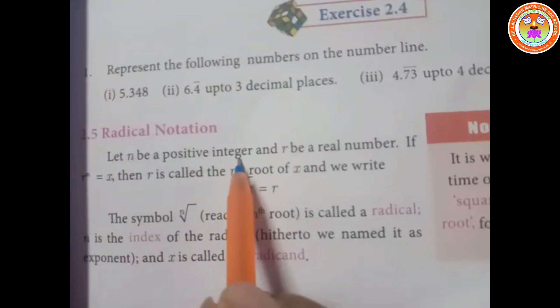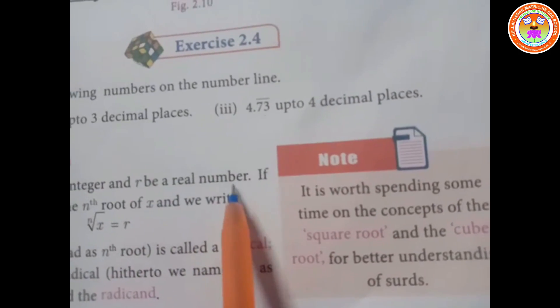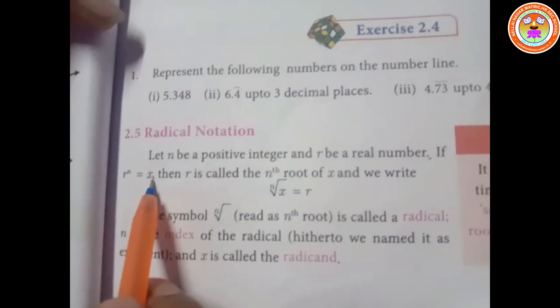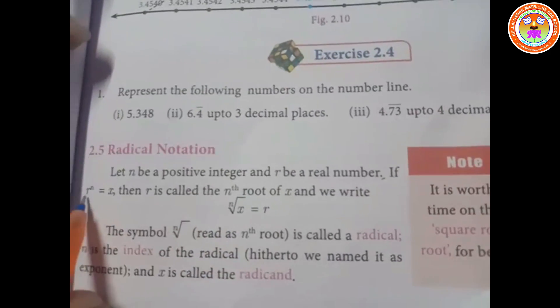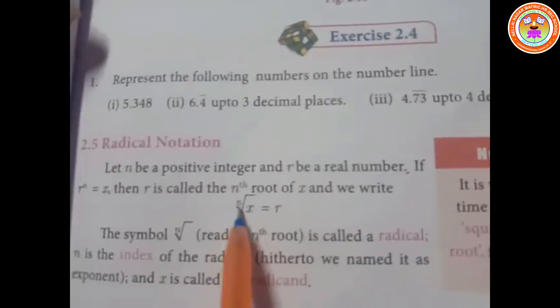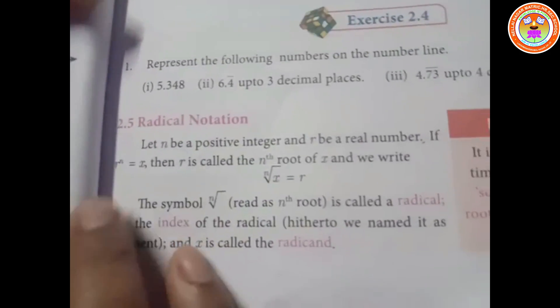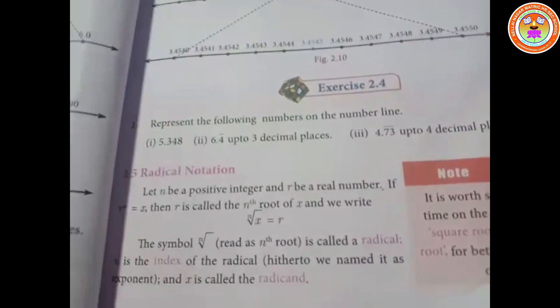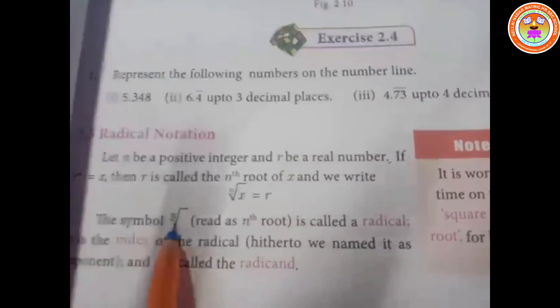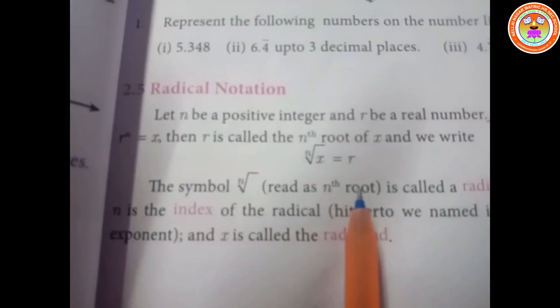Let n be a positive integer and r be a real number. If r to the power of n equals x, then r is called the nth root of x, and we write nth root of x equal to r. The symbol for this is read as nth root, and it is called a radical.